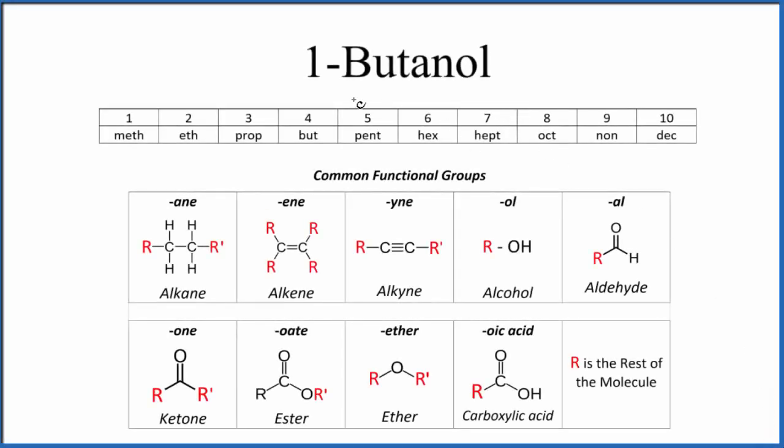Let's draw the structural formula for 1-butanol. We can also write it as C4H9OH - this is the chemical formula, also called the molecular formula. The OH on the end is important, but we're interested in the structural formula for 1-butanol.